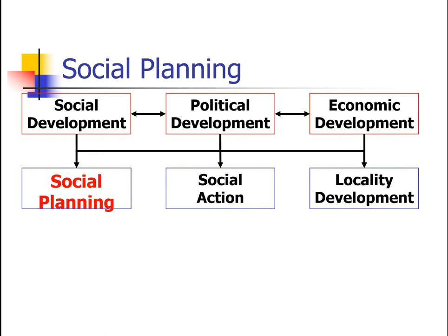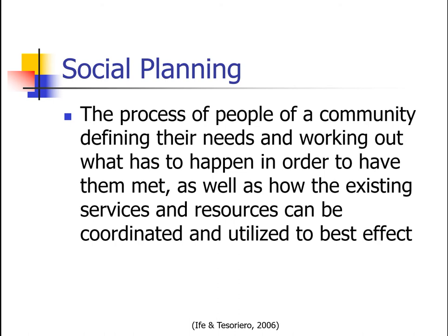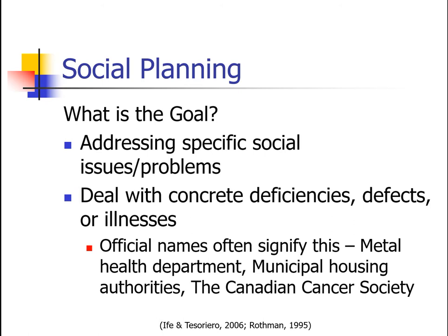First is social planning. Social planning is the process of people of a community defining their needs and working out what has to happen in order to have those needs met, as well as how the existing services and resources can be coordinated and utilized to the best effect to meet those needs. The goal is addressing specific social issues and problems. Social planning deals with concrete deficiencies — often defects or illnesses — and often the official name of the organization signifies these issues.